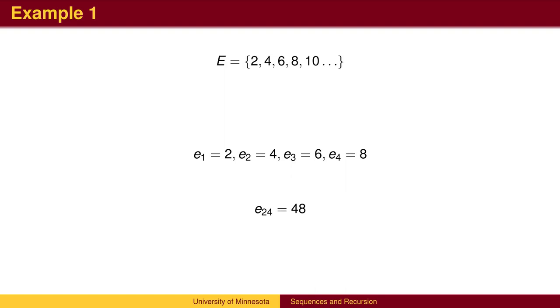Sometimes it is easy to tell the pattern and be able to skip ahead several terms. Suppose we wish to find the 24th term. Each term is 2 larger than the previous term, so the 24th term is 24 times 2, or 48.